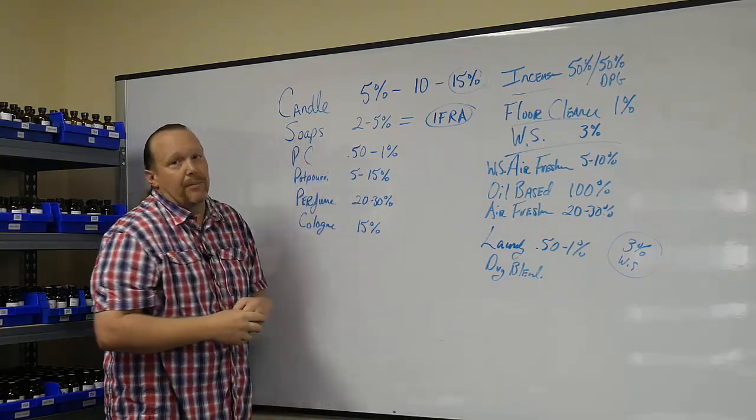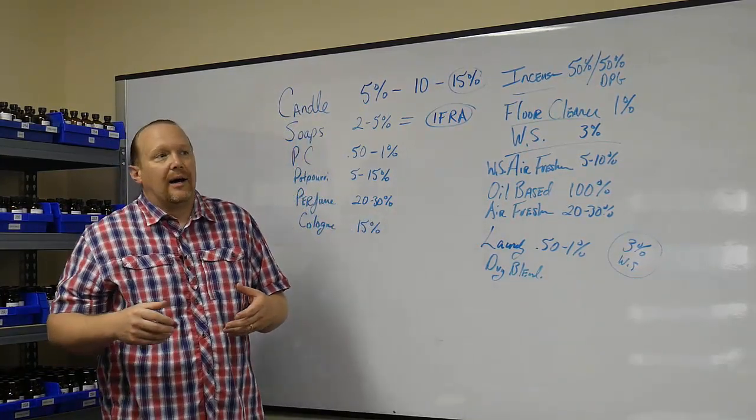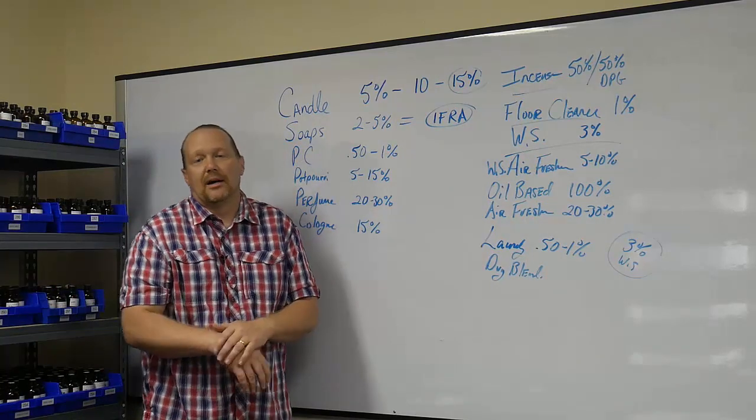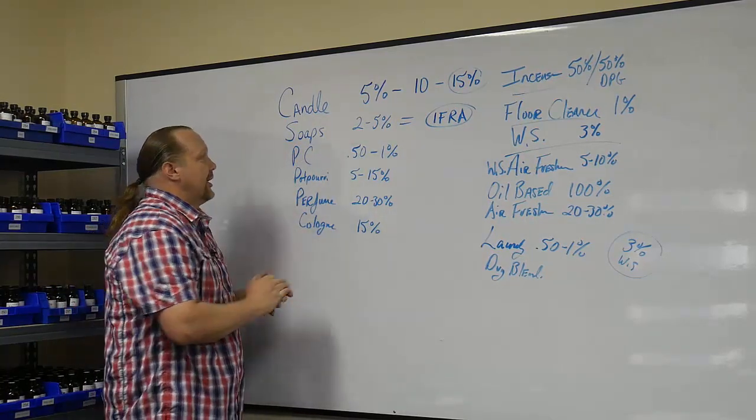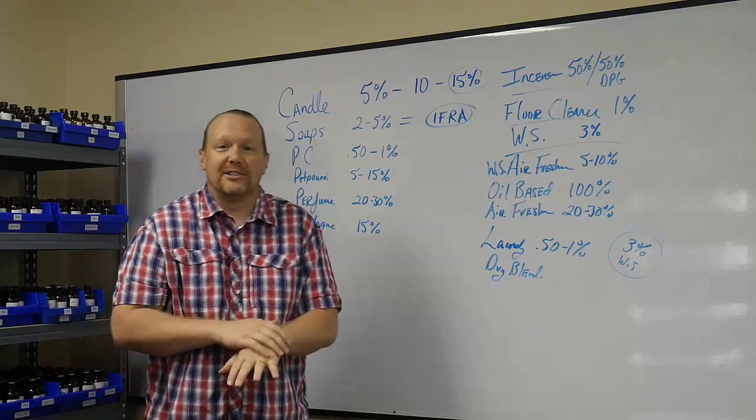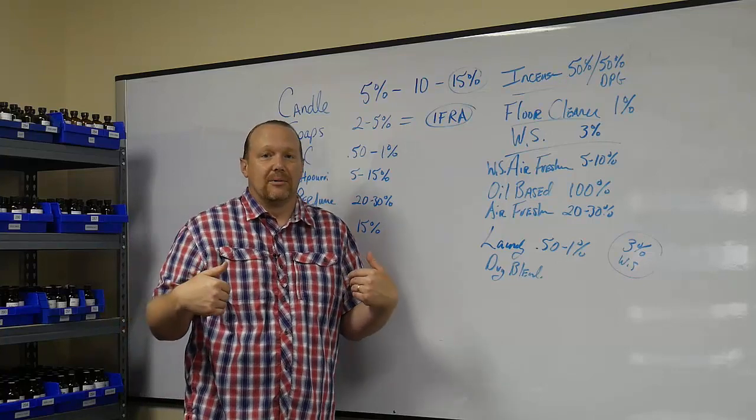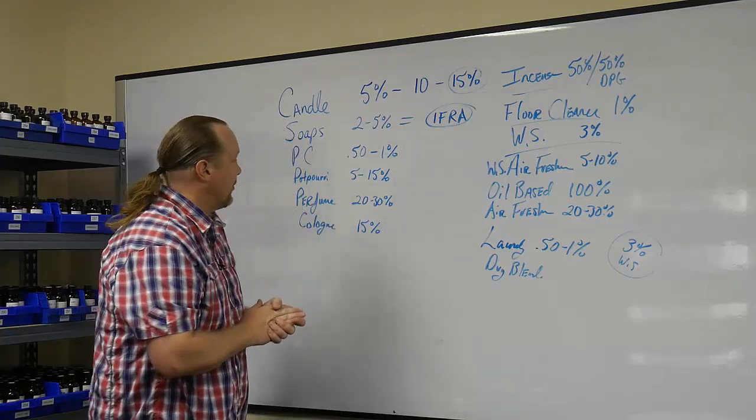PC, personal care products. That's going to be deodorants, hair care, lotions, those types of things. You're going to try to keep those at 0.5 to 1%. The reason why is because it's left on the skin and you want to make sure that you don't have any issues with fragrances staying long term on the body. So that's why it's set up that way.